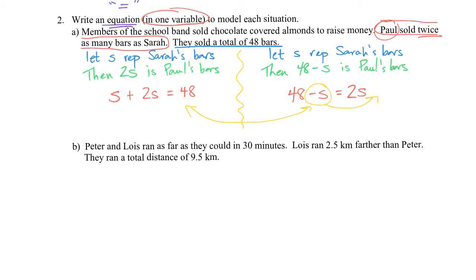Let's look at problem B. Peter and Lois ran as far as they could in 30 minutes. Lois ran 2.5 kilometers farther than Peter, and they ran a total distance of 9.5 kilometers. We need to build an equation in one variable to represent that, and we notice the second sentence and third sentence both give us distance information to work with.